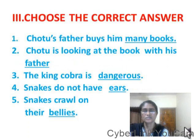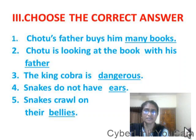Choose the correct answer. Chotu's father buys him many books. Chotu is looking at the book with his father. The King Cobra is dangerous. Snakes do not have ears. Snakes crawl on their bellies.